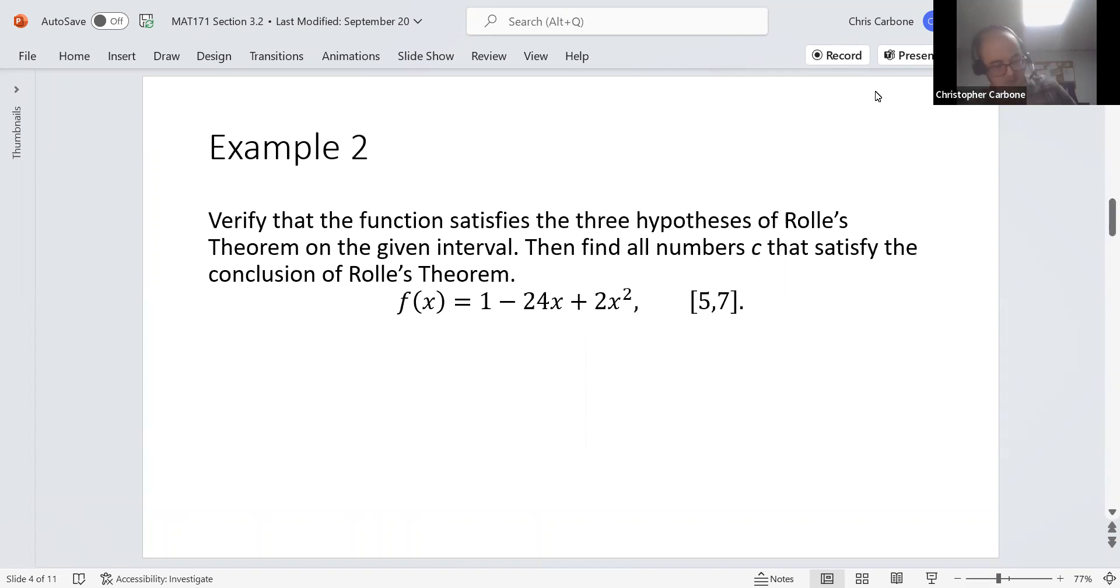Now here we have example two. We want to verify that the function satisfies the three hypotheses of Rolle's theorem on the given interval. And then find all numbers c that satisfy the conclusion of Rolle's theorem. f of x is equal to one minus 24x plus two times x squared. And the interval is the closed interval from five to seven.